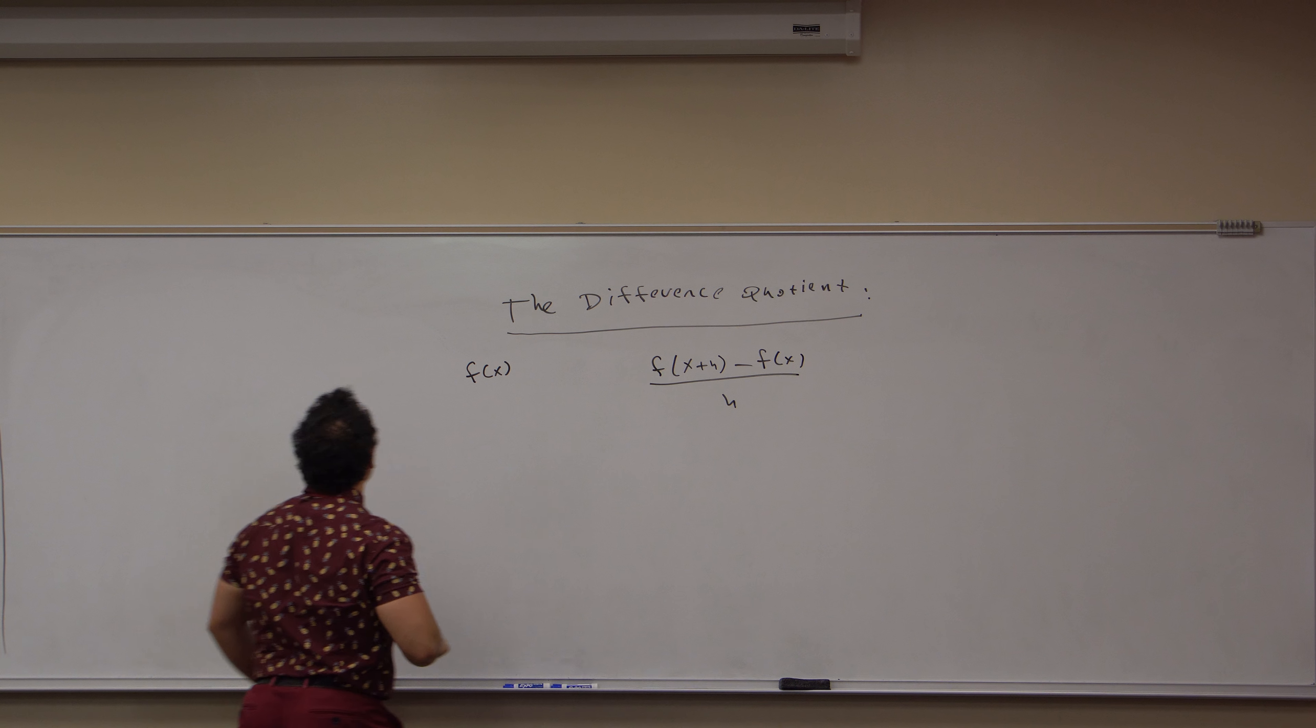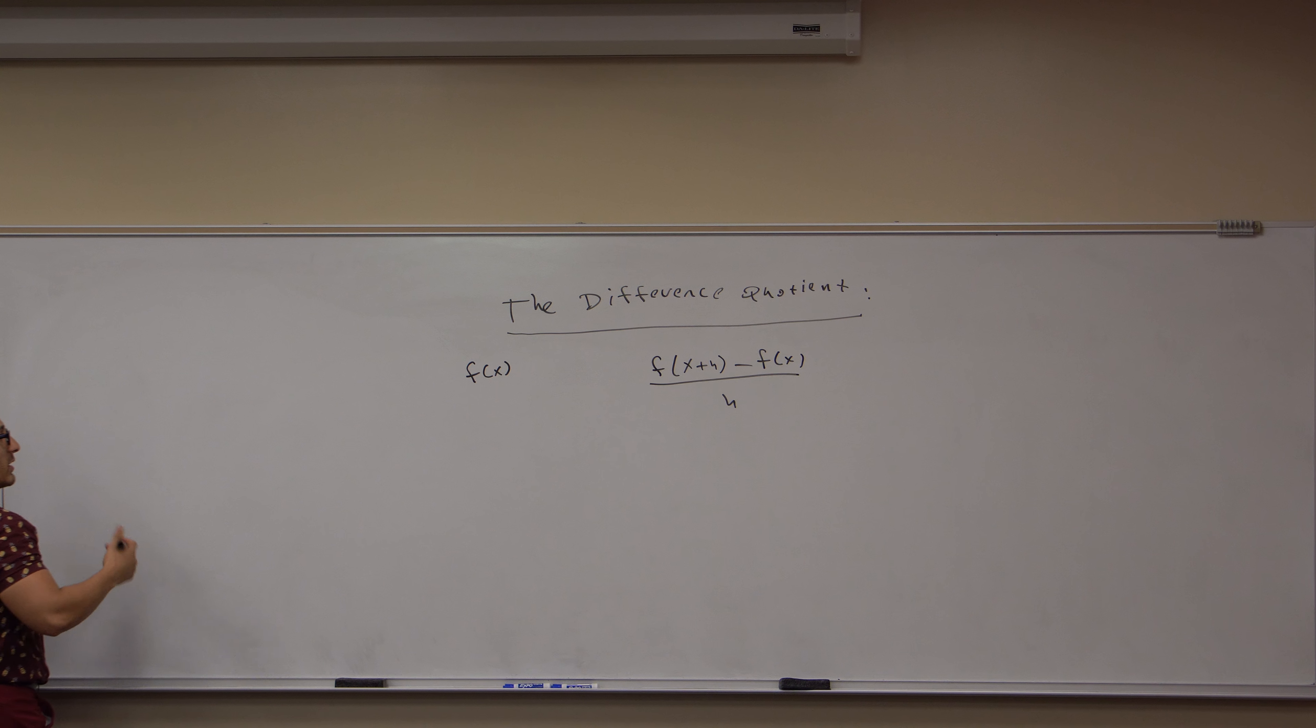So what does this mean? Well you'll understand what this means when I give you an example. For example let f of x equal something simple: 3x plus 2. Then its difference quotient is f of x plus h minus f of x all over h.